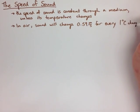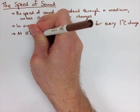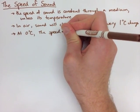So at 0 degrees Celsius, the speed of sound is 332 meters per second.